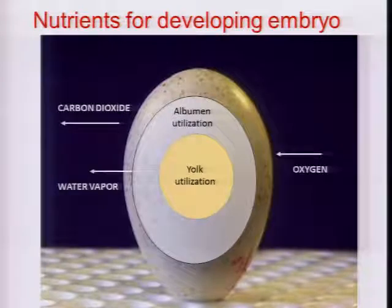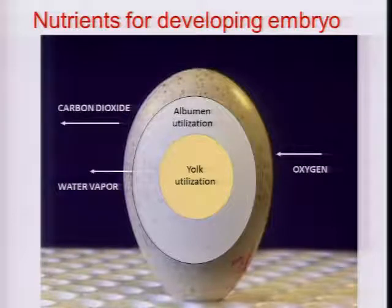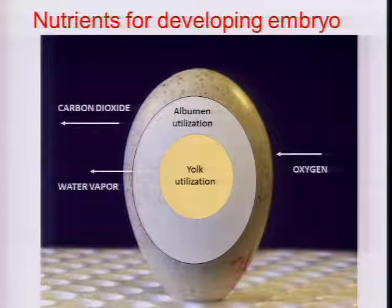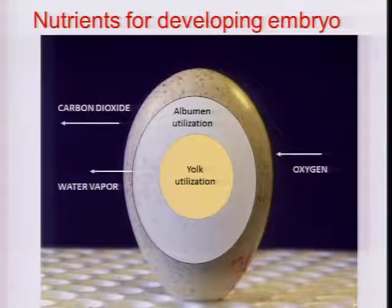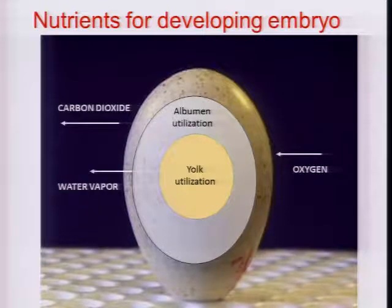This is a turkey egg, not a chicken egg. But incubation for me is all about managing the nutrients that are available to the embryo. We've got our yolk nutrients, our nutrients in the albumin, and our nutrients in the shell. The only outside nutrient that we really have to supply to the developing embryo would be oxygen, and then our byproducts of metabolism will be carbon dioxide and water vapor.